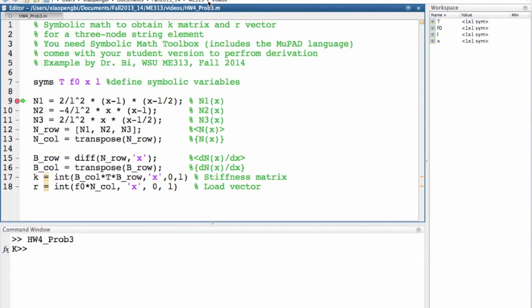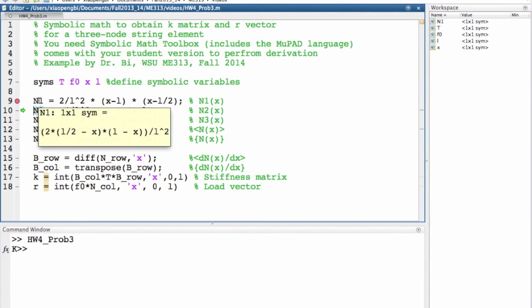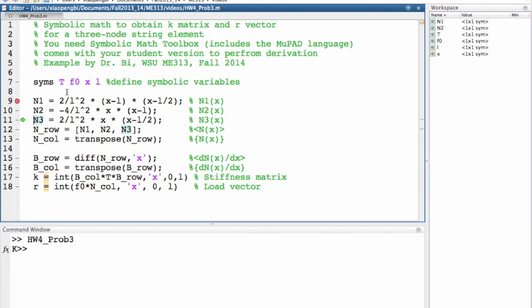Then, input shape function N1(x) and N2(x) and N3(x). Put them together to form row N transpose to get column N.